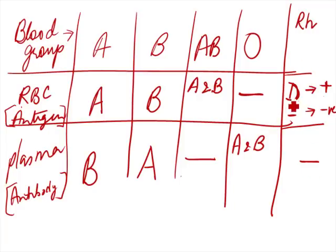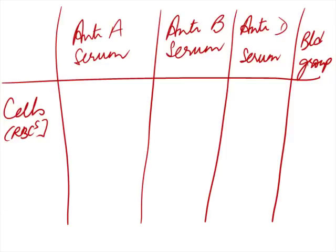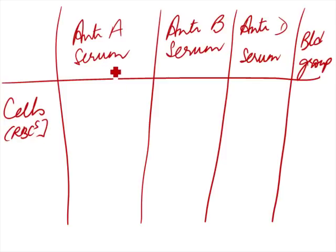In Rh typing, whether they have antigen D or not, there is no antibody present. The antibody only gets produced if you give the wrong blood type to them. To find out what blood group someone is, you go to a lab where they have ready-made serum. Since the antigens are only A, B, and D, they have anti-A serum, anti-B serum, and anti-D serum. These will react with the antigens of the same name, and they add each to your red blood cells.